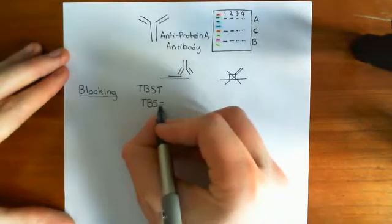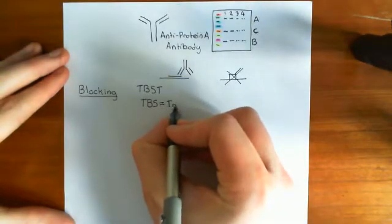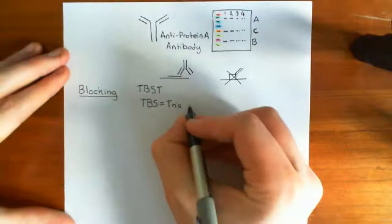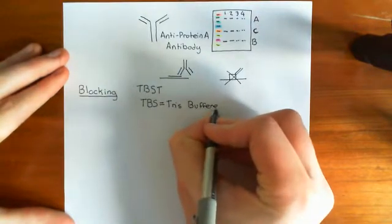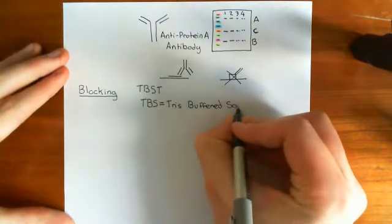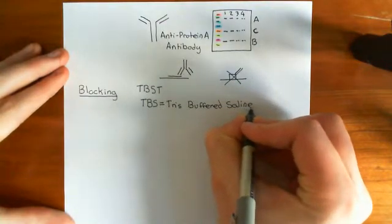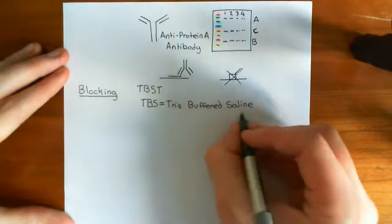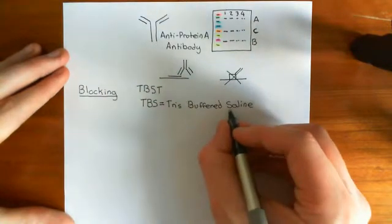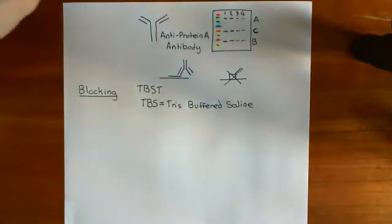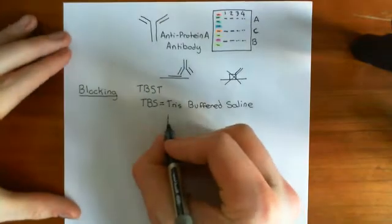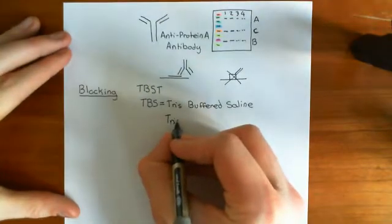So TBS is something that you'll see all the time if you're working in a laboratory. It stands for Tris-Buffered-Saline. Basically, it contains two major ingredients: Tris and salt. Salt in water is then called saline. So I suppose you could say it contains three major ingredients: water, salt, and Tris. So we'll start off with the one that you probably haven't heard of, which is Tris.